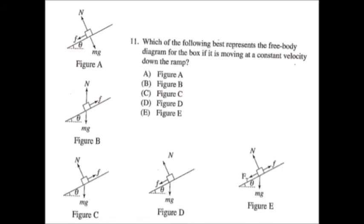Which of the following best represents a free body diagram if it's moving at constant velocity? Key phrase there: constant velocity. Alarm bells go off in your head when you hear constant velocity. The answer is C.